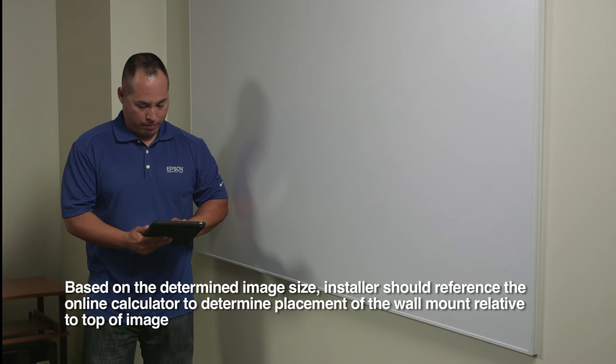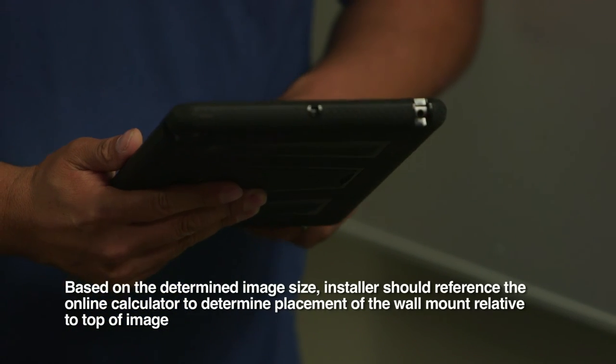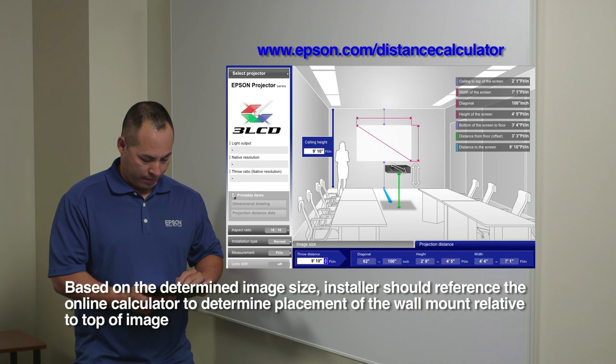After determining the image size, use the Epson online distance calculator to determine where to place the wall mount plate relative to the board.